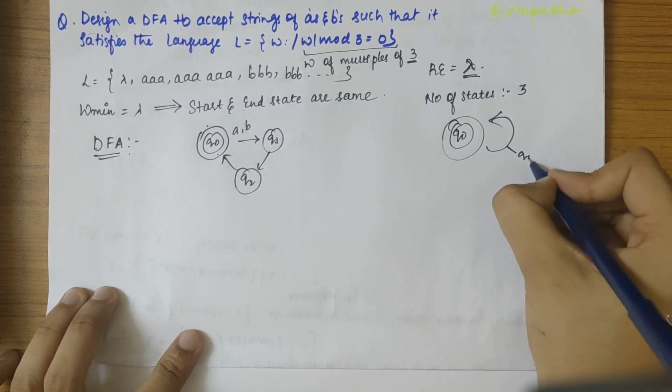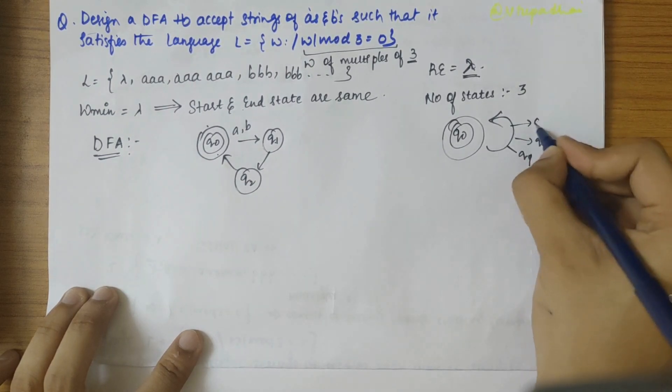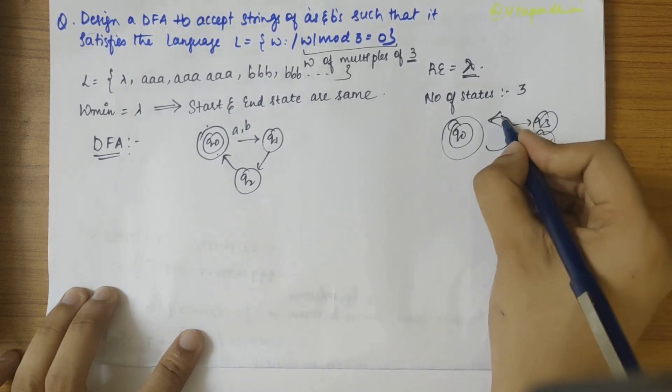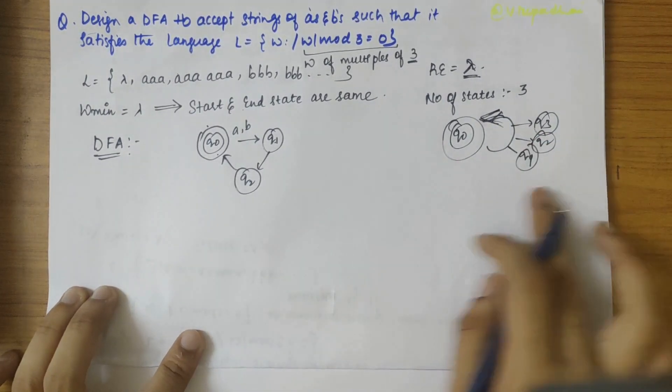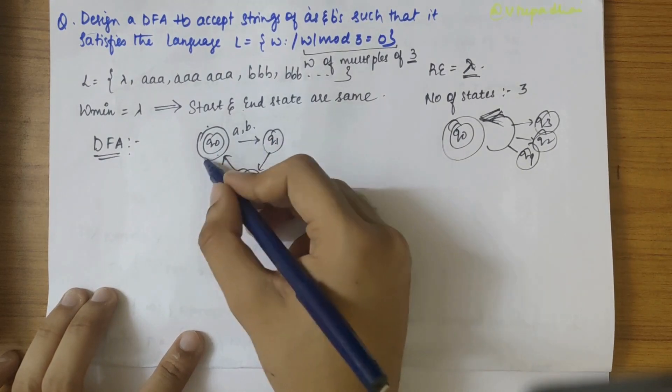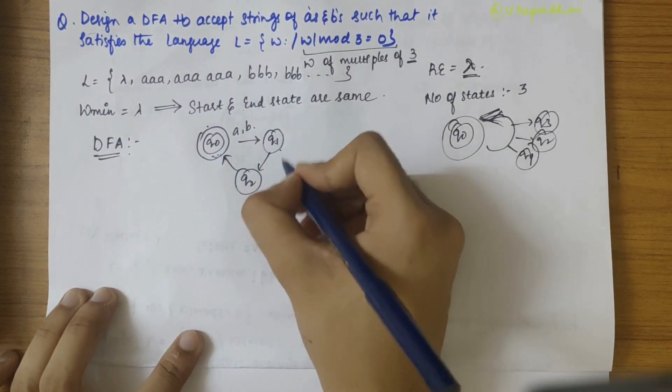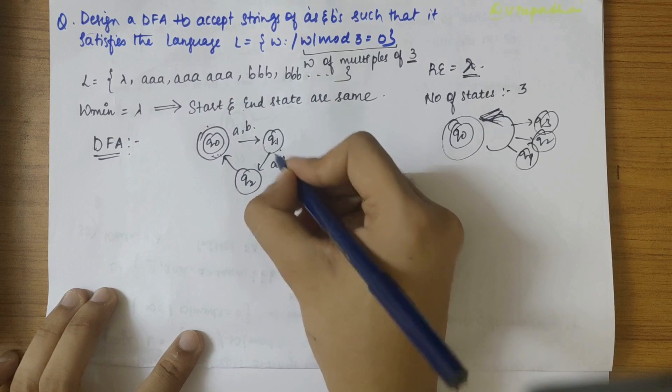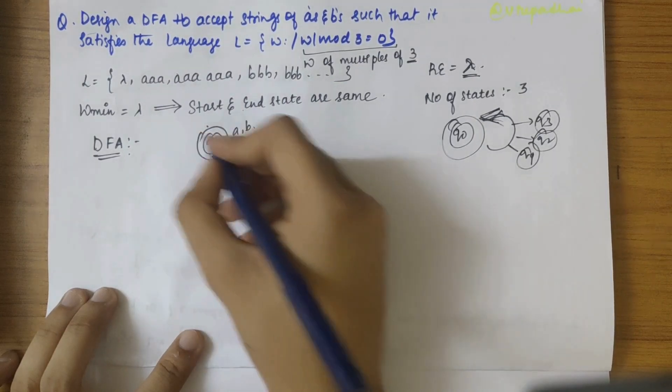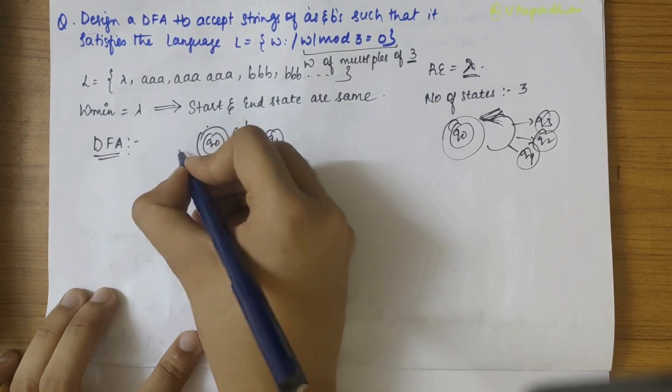So if you add Q1 here, Q2 here, it doesn't matter. It will complete the loop because start and end state both are same. So this way, be it A or B, the transition would be to Q1, and here be it A or B, the transition would be to Q2, and here the transition A and B, it will be to Q0 itself.